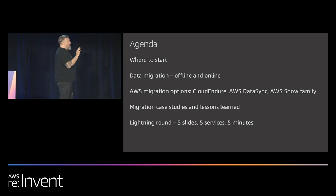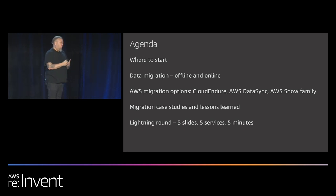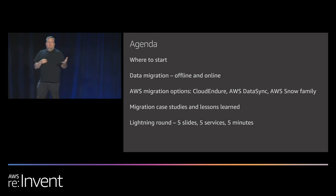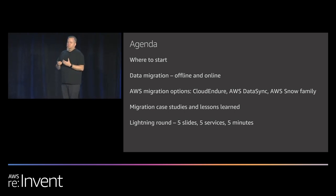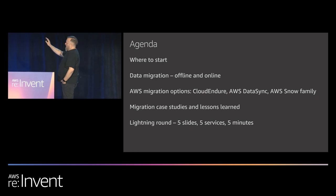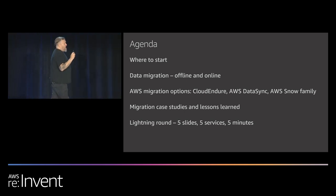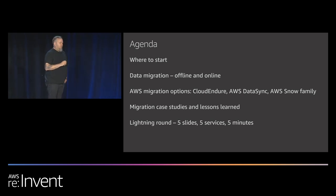This is a 200-level session. I'm going to be giving you information on where to start, some of the differences between online and offline migration, and things to think about. I hope that you leave with a better understanding of the ways that you can move data into and even out of AWS, and a good idea of where to start when it comes to which service to choose and where to put the data on the other end. We also have a slide for partners, and I'm going to talk about a few case studies and hopefully share some lessons learned.